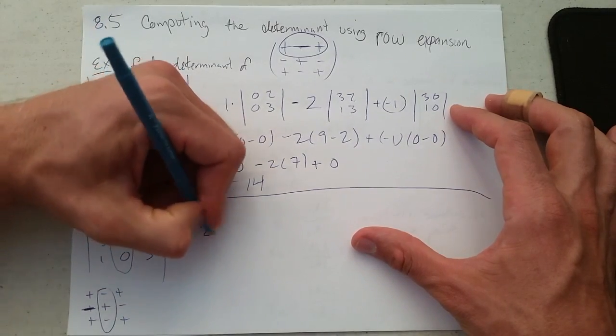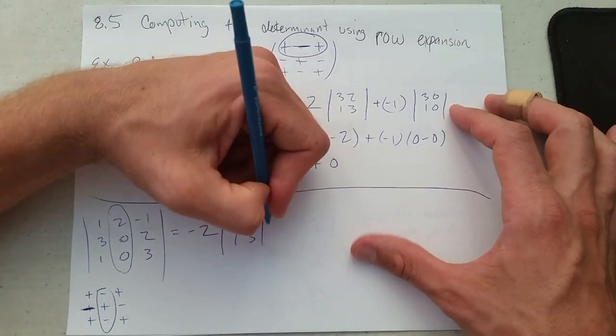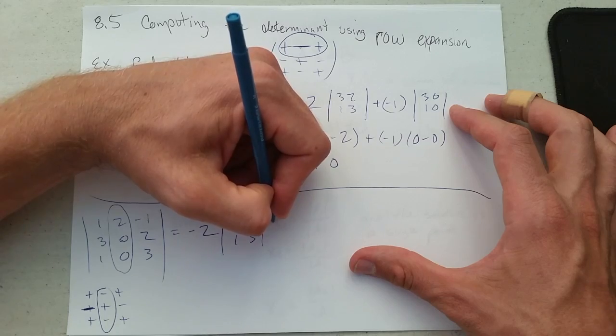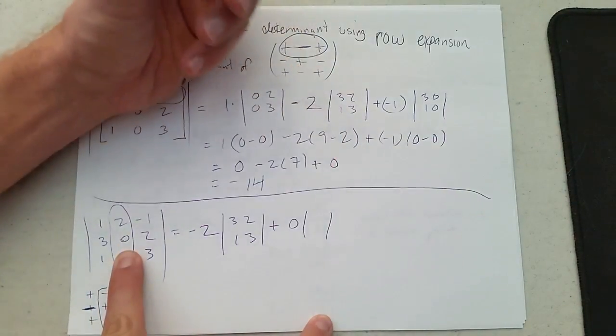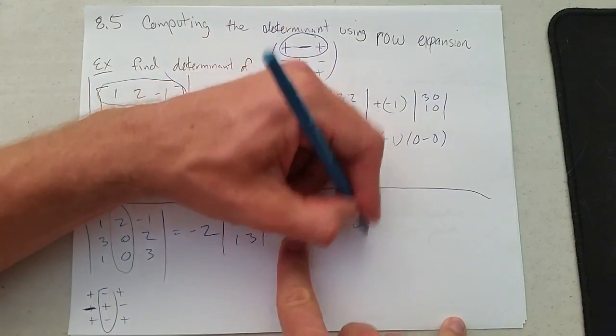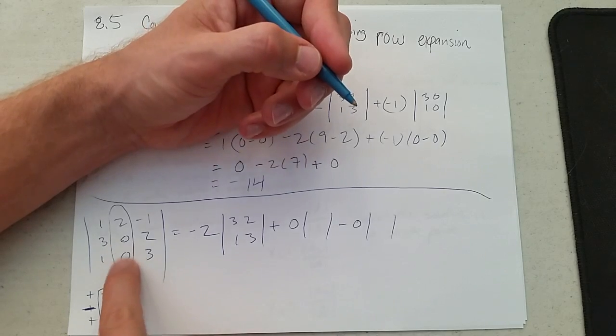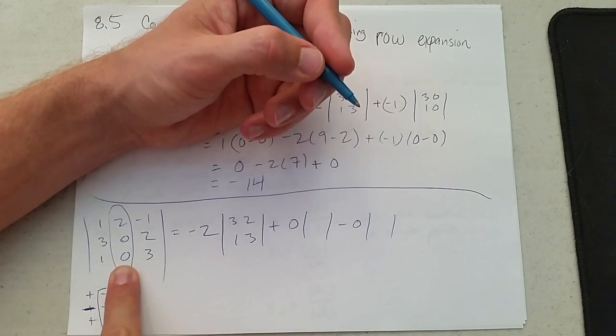So it's going to be minus 2 times the determinant of 3, 2, 1, 3, plus 0 times the determinant of something I don't care about because it's times 0, minus 0 times the determinant of—I don't even need to bother with these minors because the coefficients here are already 0.